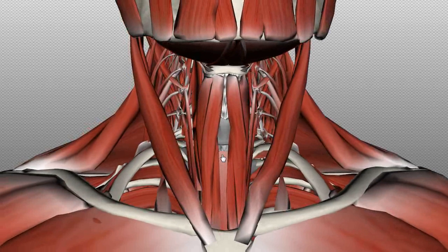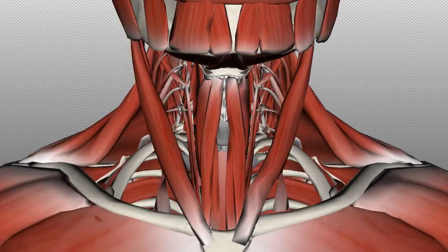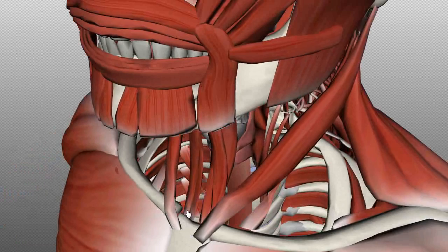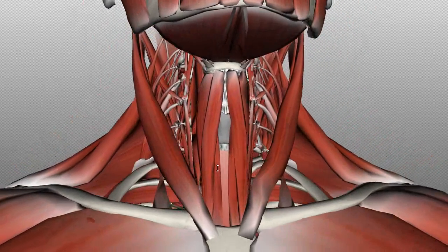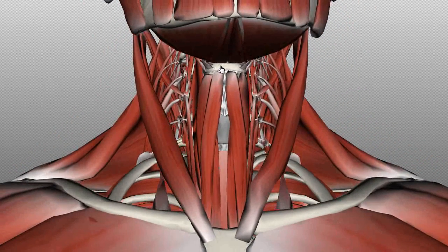The first muscle extends from the hyoid bone to the posterior aspect of the sternoclavicular joint. Because it attaches to the hyoid and the sternum, it's called the sternohyoid. What this muscle does is depress the hyoid bone after swallowing.